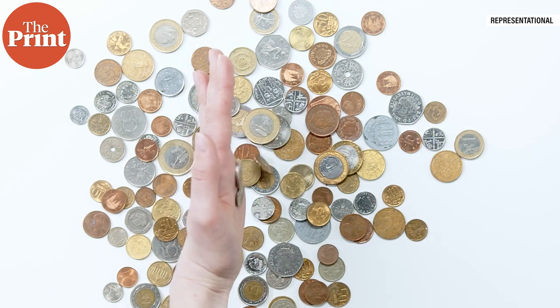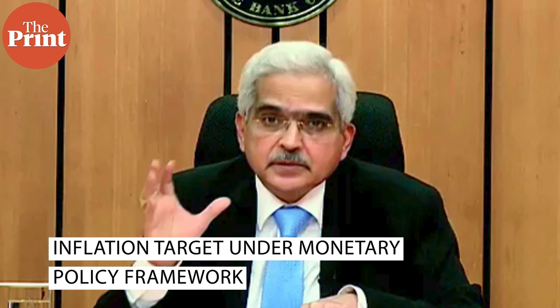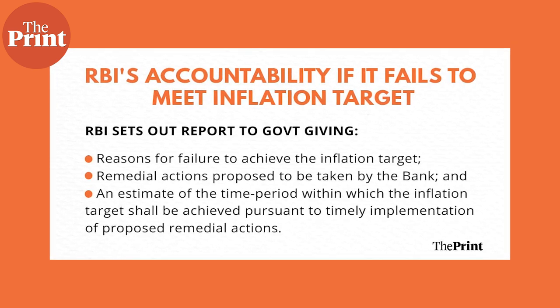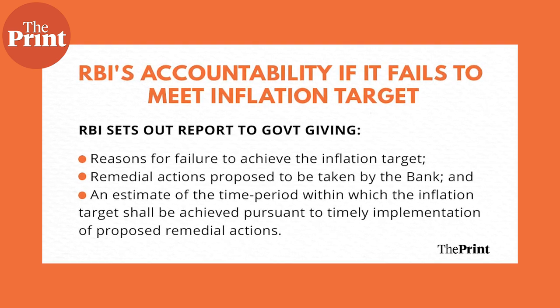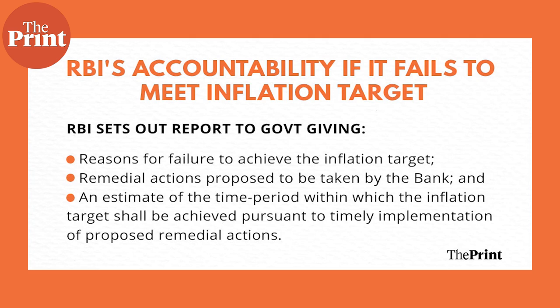What happens when the MPC is not able to target inflation at four percent? Under the monetary policy framework, if the average inflation is more than the upper tolerance level of six percent for any three consecutive quarters, or the average inflation is less than the lower tolerance level of two percent for any three consecutive quarters, the RBI would be deemed to have failed to meet the inflation target. As is currently the case, where CPI inflation has remained above six percent for six consecutive months, the RBI must submit a report to the central government stating the reasons for failure, proposed remedial actions, and an estimated time period within which the inflation target will be achieved.